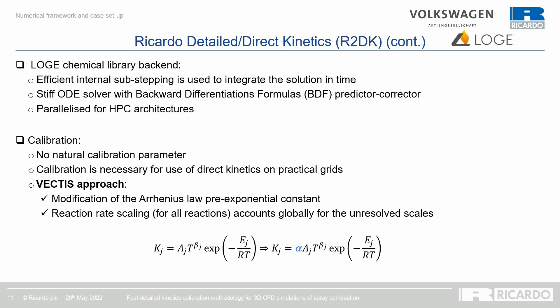However, within the RANS framework, calibration is necessary to use direct kinetics on practical grids where the flame front is not fully resolved. The approach taken in Vectis is to modify globally the Arrhenius pre-exponential constant with a reaction rate scaling applied for all cells and all reactions, to account globally for the unresolved scales.